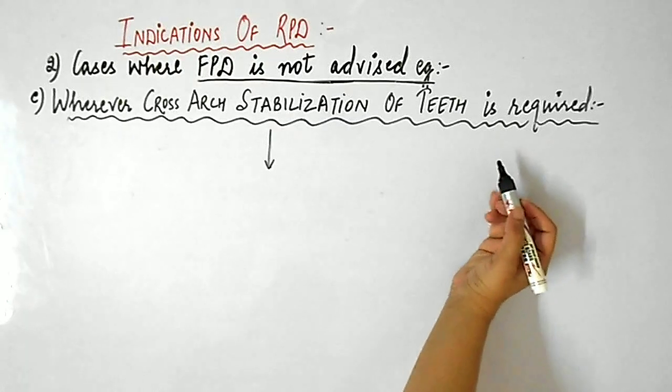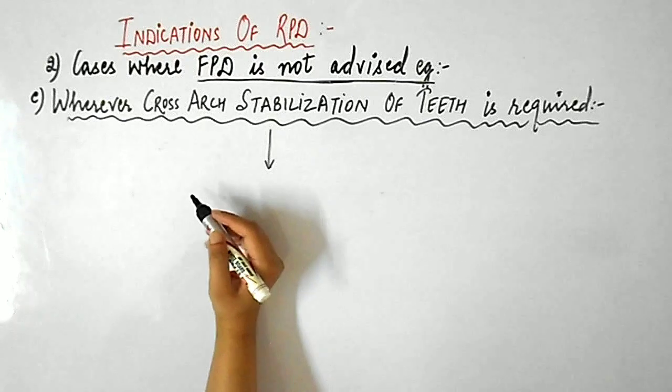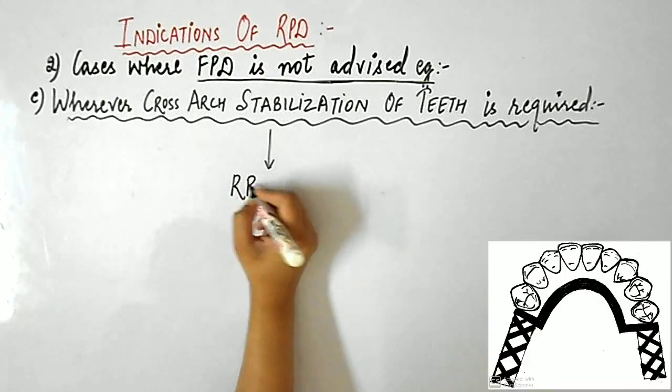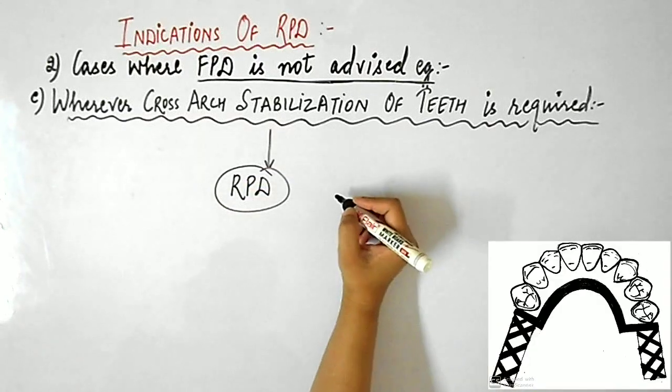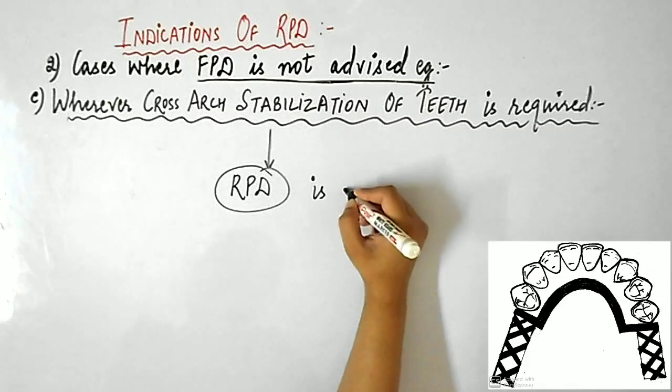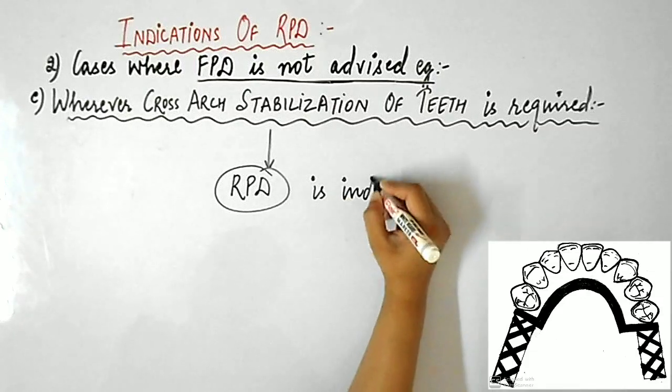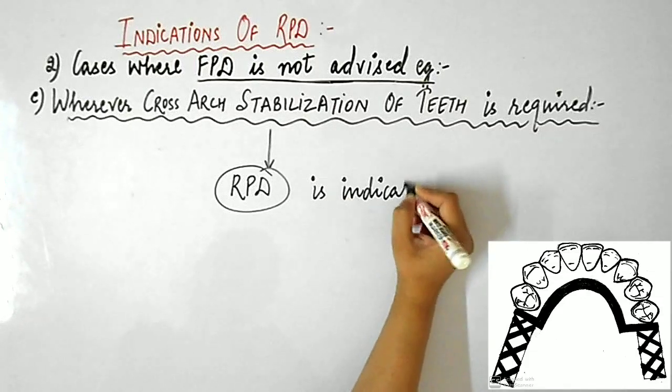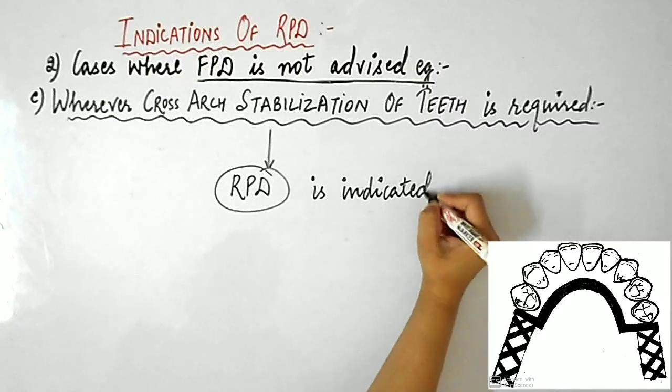Next indication is wherever cross-arch stabilization of teeth is required, RPD is indicated. As you can see in this picture, fixed partial denture can provide only limited lateral stabilization. Hence, RPD is indicated in such clinical situations.